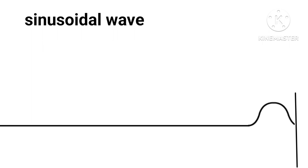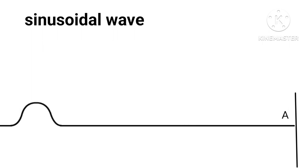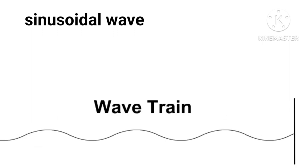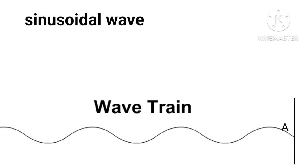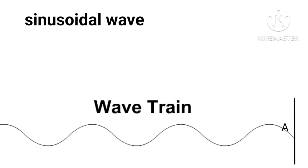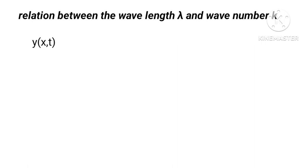If we give a vertical jerk to the free end O of a string tied at point A, the elements of the string oscillate up and down. The pulse will damp out before reaching the other end; reflection from end A is ignored. But when we give a continuous up and down jerk, a wave train is produced that strikes the other end at A and is reflected. The resulting wave is periodic, called a harmonic or sinusoidal wave.